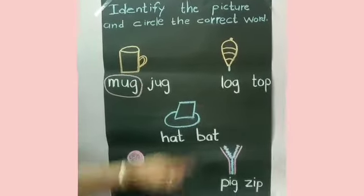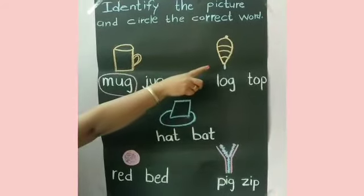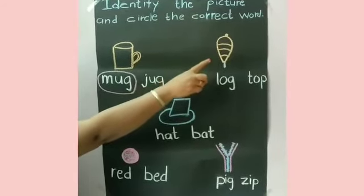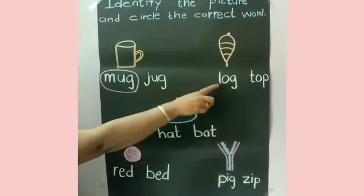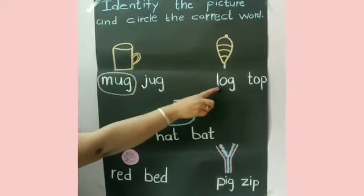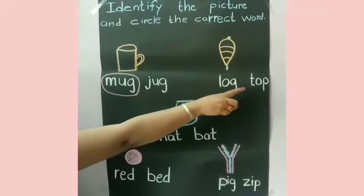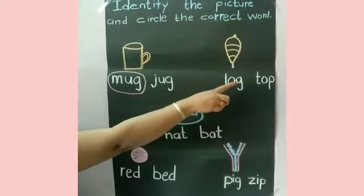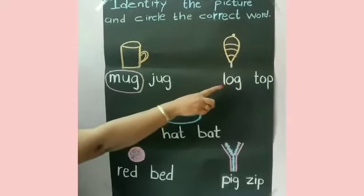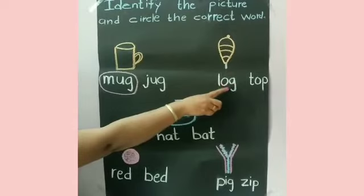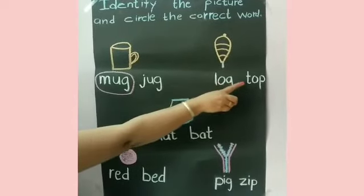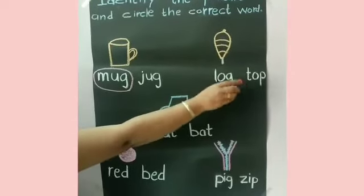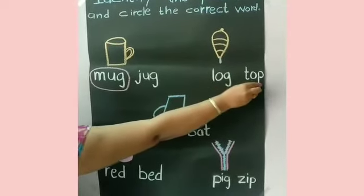Now, which picture is this? Yes, it is a top. L-O-G log, T-O-P top. So we will circle on T-O-P top.